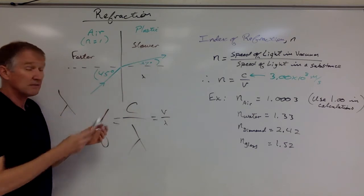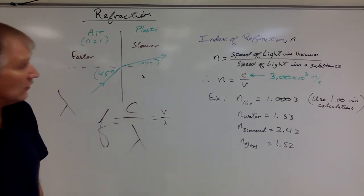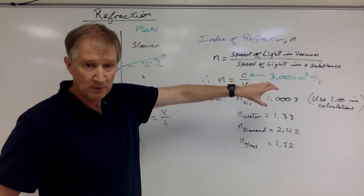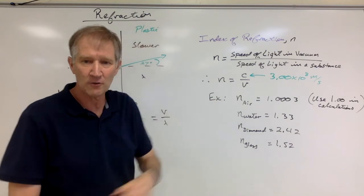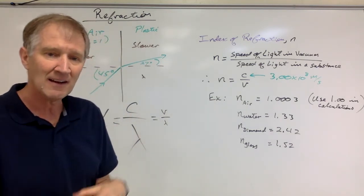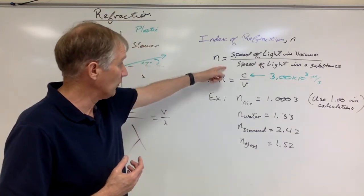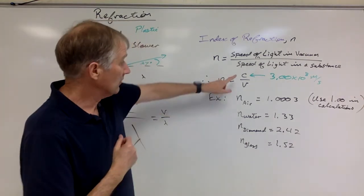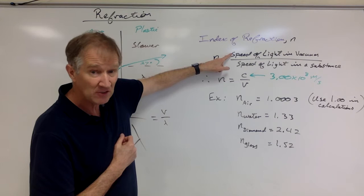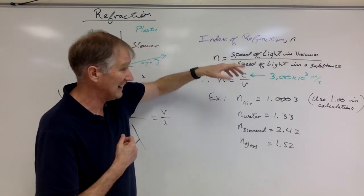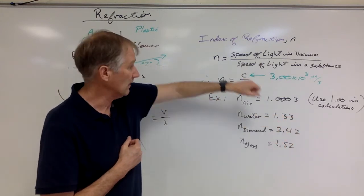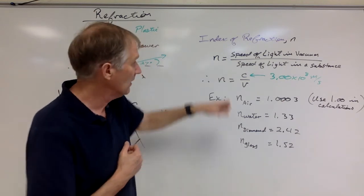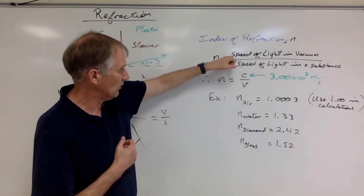All angles are measured to the normal. For tonight's homework you'll be calculating speeds in various substances using the index of refraction, which uses a lowercase n. It has no units because it's a speed divided by a speed, it's always positive, and it can never be less than one. The formula is n = C/V, where C is the speed of light in the vacuum and V is the speed in the other substance.